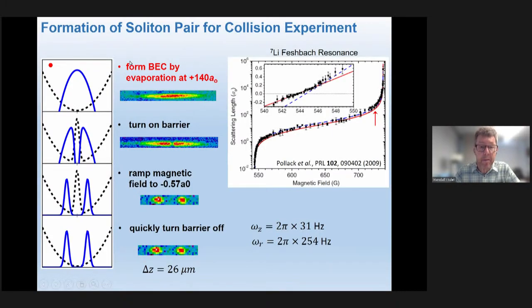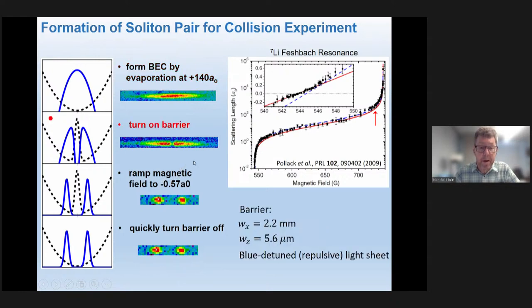So how do we form a soliton pair to do a collision experiment? We start by forming a repulsive BEC where the scattering length is big and positive, and we do evaporative cooling to cool the gas below its transition temperature. Then we turn on a barrier — a cylindrically focused sheet of light crossing the z-axis — which splits the condensate into two pieces. Then we ramp the magnetic field to where the scattering length is small and negative, something like minus 0.57 Bohr.